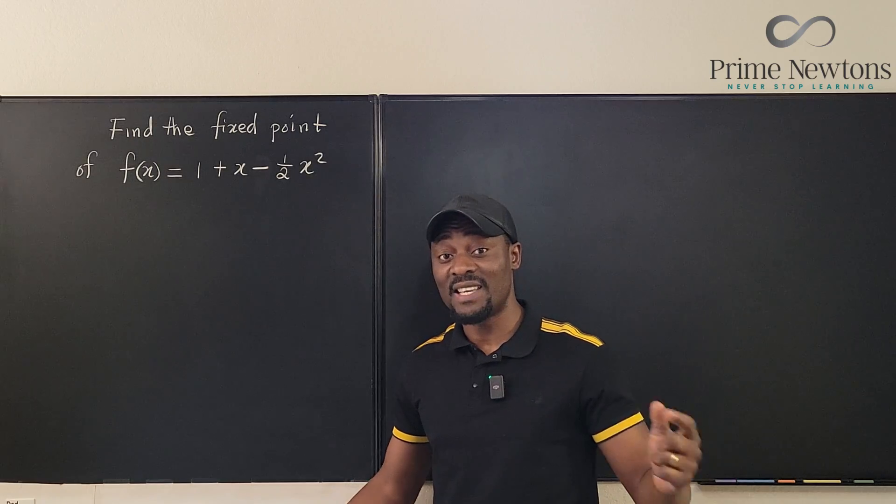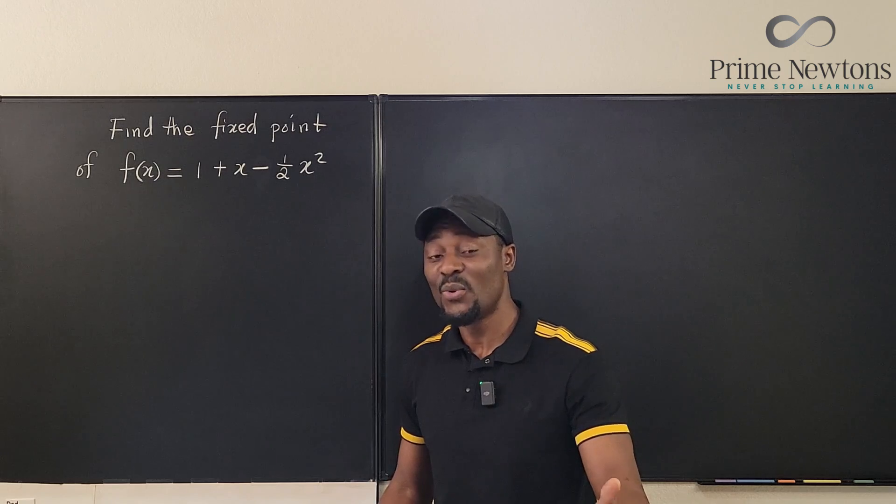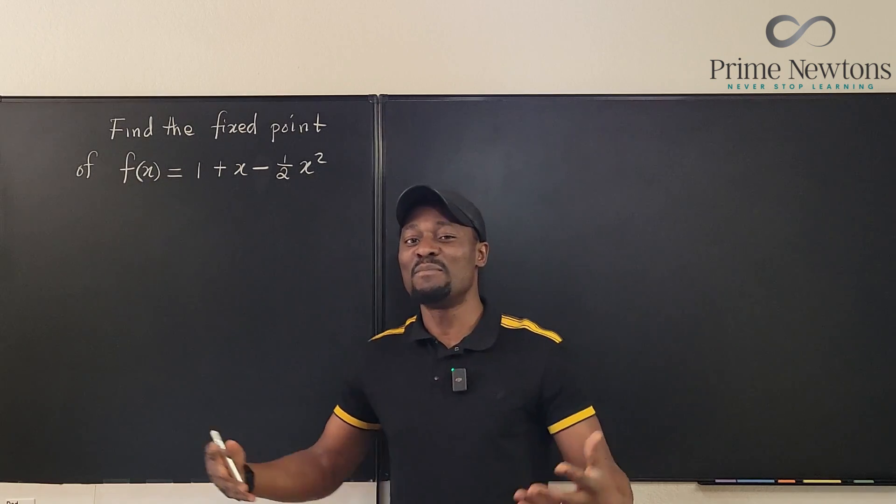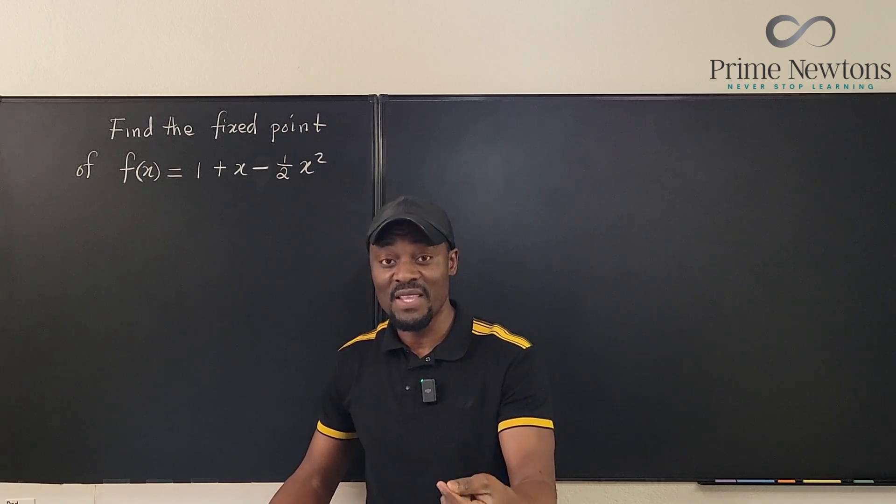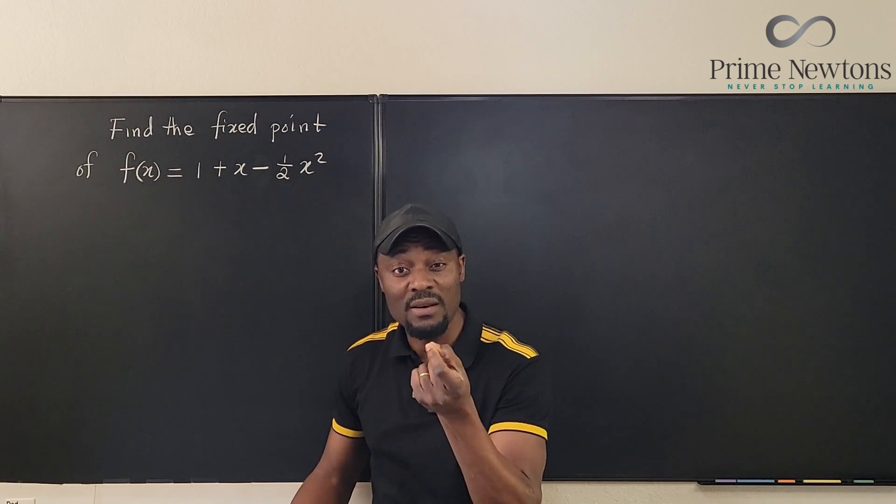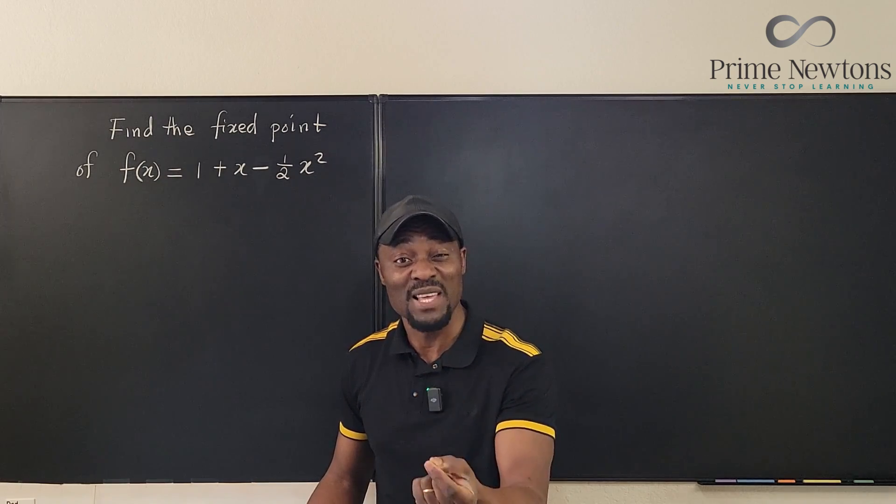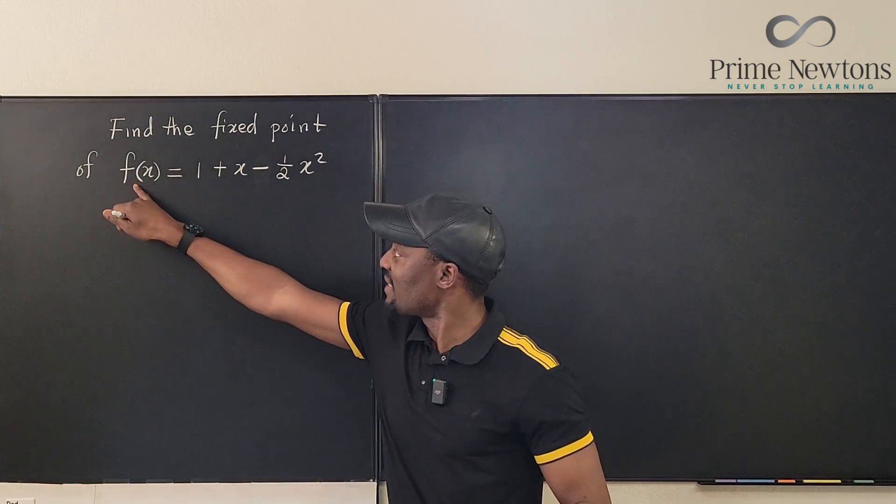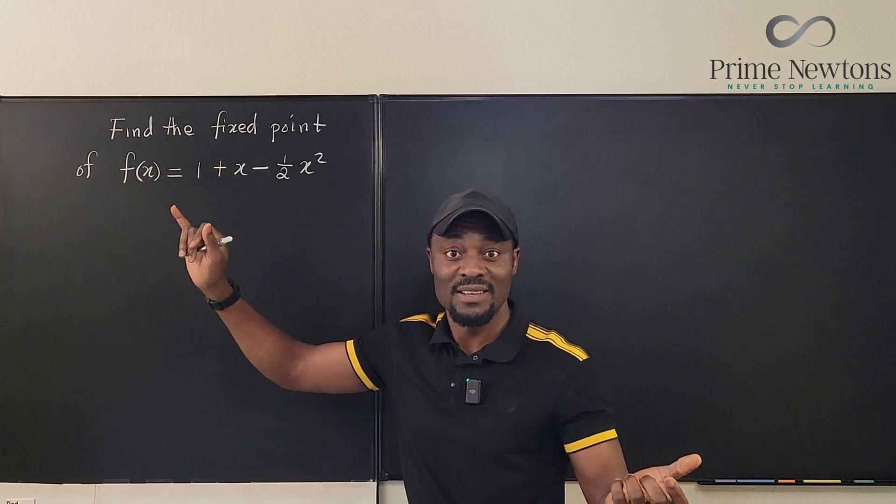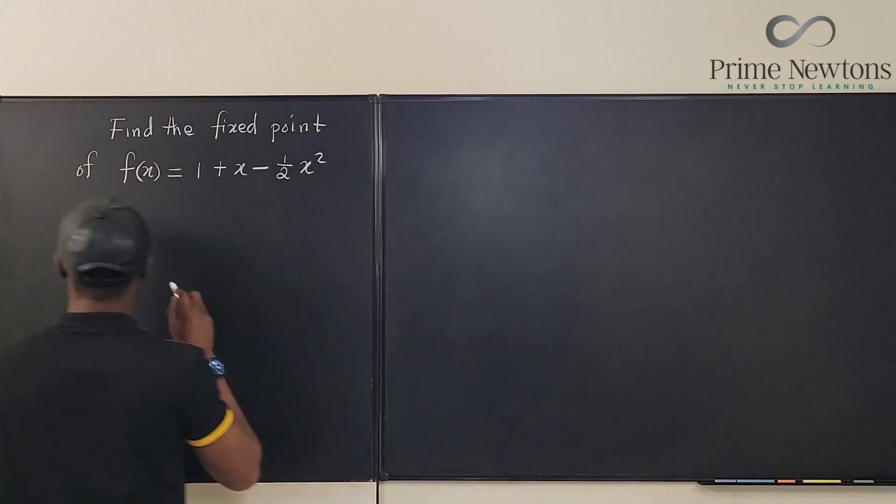So what exactly is the fixed point of a function? Well, I think it's the name that makes it look or sound complicated. The fixed point of a function is the point where the input is the same thing as the output. That is where f(x) is equal to x. That's it.